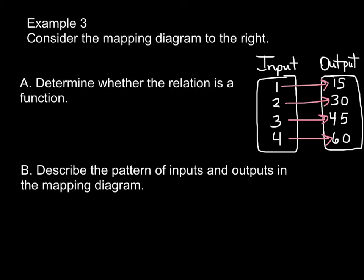Example 3: Consider the mapping diagram to the right. We have a mapping diagram, a relation. Determine whether this relation is a function. So let's look, does every input only go to exactly one output? Yes, they do. So yes, it is a function.